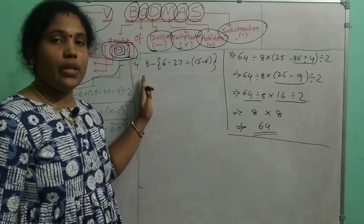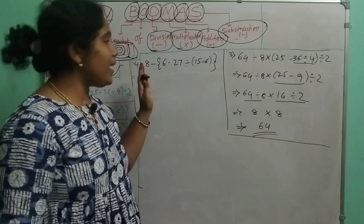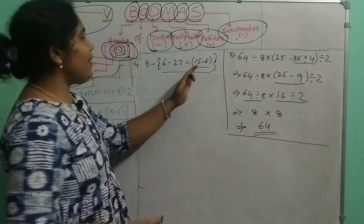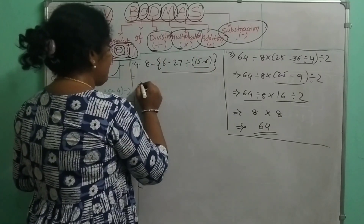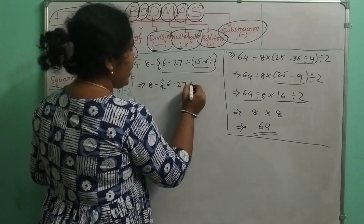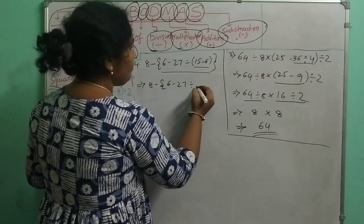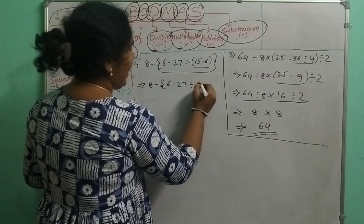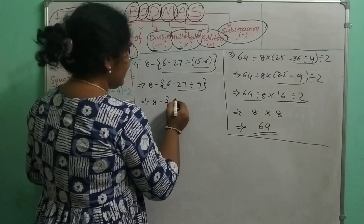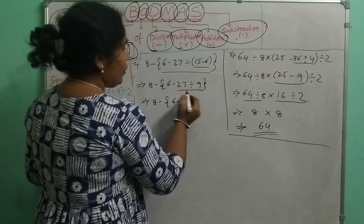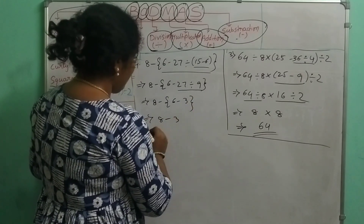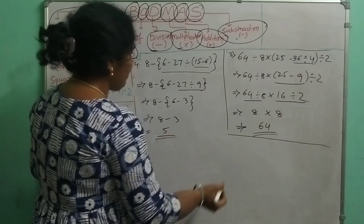Let's do the fourth example. Here we have small brackets and curly brackets. First of all, we will do the small bracket. First step: 8 minus curly bracket, 6 minus 27 divided by — 15 minus 6 equals 9. Then we do the division: 27 divided by 9 equals 3. Next step: 8 minus 6 minus 3 equals 5. So the answer is 5.